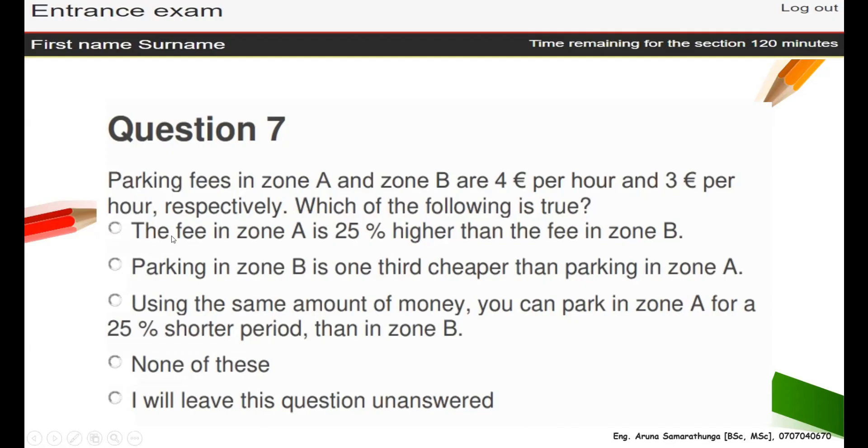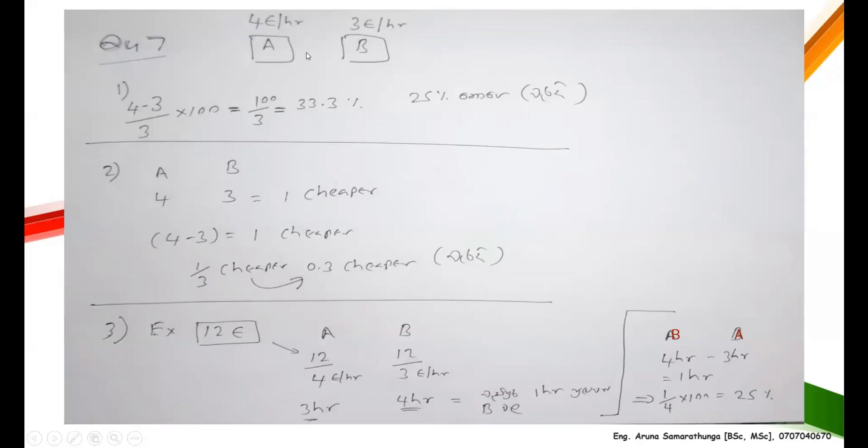Now you have to consider one by one. The fee in zone A is 25% higher than the fee in zone B - so you have to compare with B. Parking in zone B is one-third cheaper than parking in zone A. Using the same amount of money, you can park in zone A for 25% shorter period than in zone B.